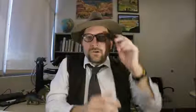So dinosaurs during their reign on earth saw a profound change in the flora during the early Cretaceous period. During the Cretaceous the flowering plants took off in diversity, and this had a profound effect on the food available to the dinosaurs. This might explain why the dinosaurs during the late Cretaceous were much more numerous than they were during the Jurassic period.